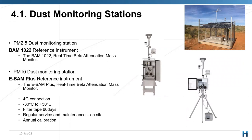According to the EPA Victoria, the main particulates that we monitor for dust would be PM2.5 and PM10. There are two different instruments in our range geared specifically for this. The BAM 1022 is specifically geared for PM2.5 — that's the picture in the middle on the left. And the PM10-dedicated monitor would be the EBAM+, which is the one at the bottom. These units, as you see them there, are mains powered.